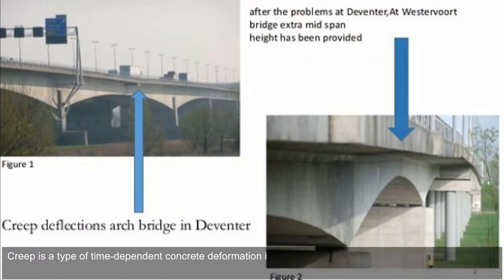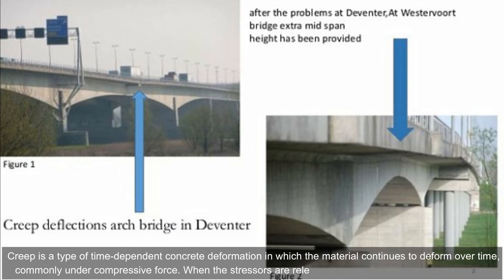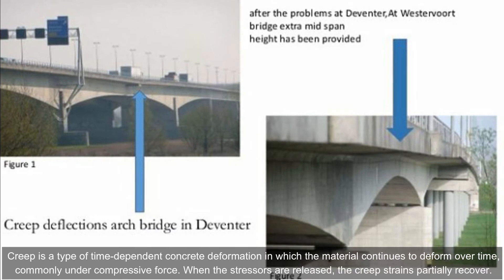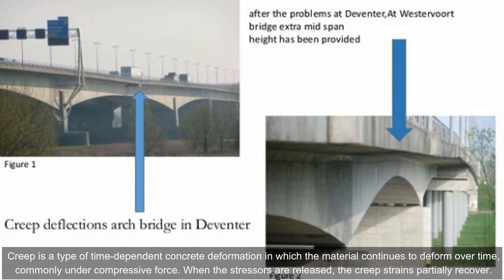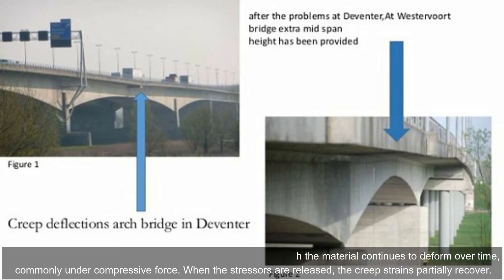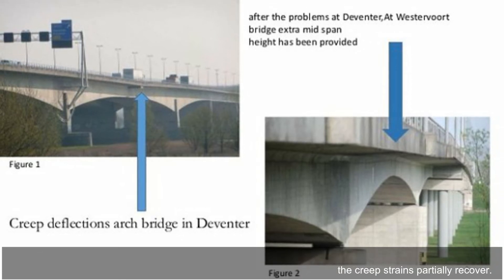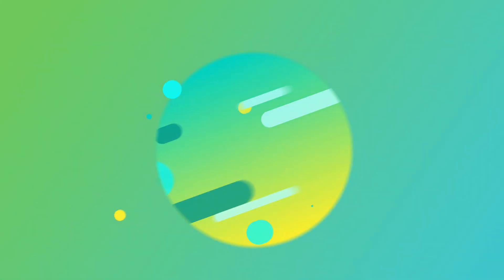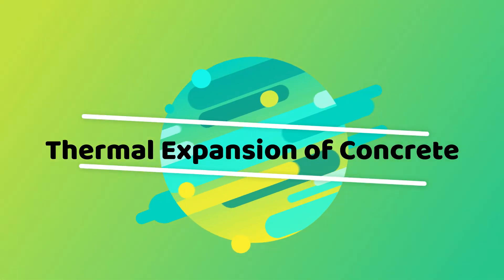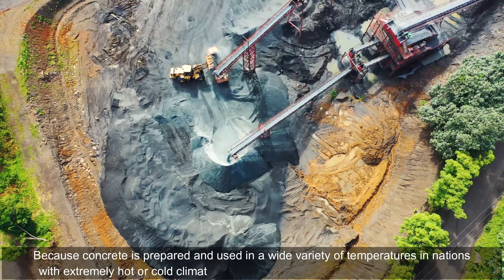The cement content, on the other hand, has a smaller impact on total concrete shrinkage. Creep is a type of time-dependent concrete deformation in which the material continues to deform over time, commonly under compressive force. When the stressors are released, the creep strains partially recover.